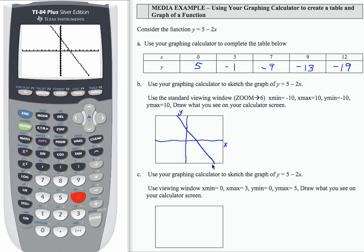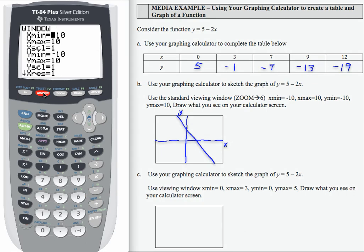Let's see in part C, use your graphing calculator to sketch the graph and use a different viewing window. If I want to change the window, I'm going to need to go over to the calculator and press the window button. And then if I want to change x min to 0, I'm going to type 0 there, then x max is 3. I'm using my arrow keys to go down to the different parts. Let's see, y min is 0 and y max is 5.